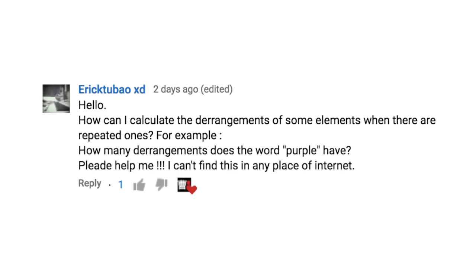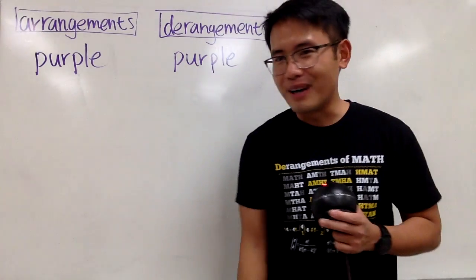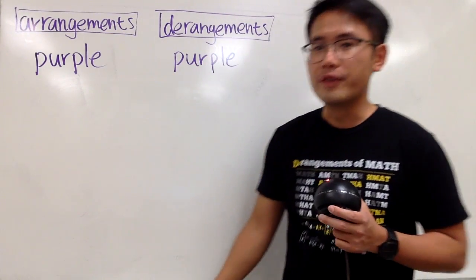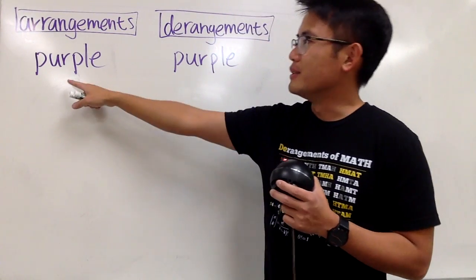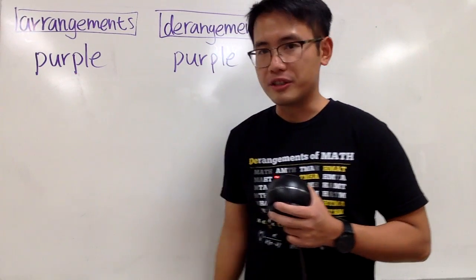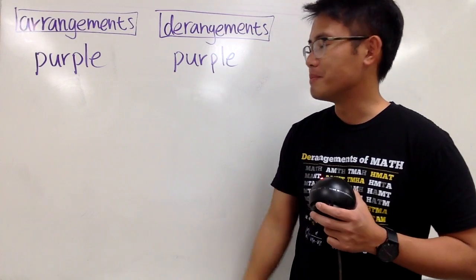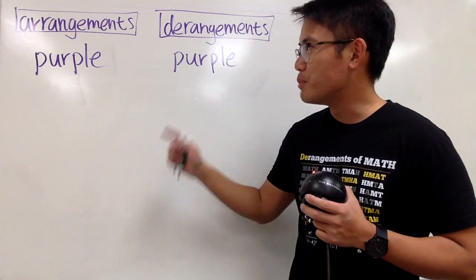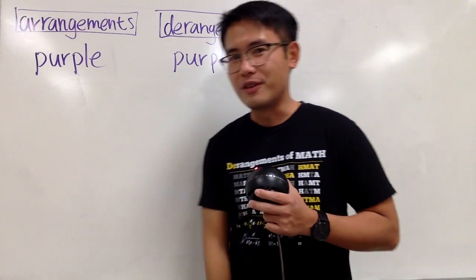Ladies and gentlemen! We are going to talk about arrangement and derangement of the word purple. You see that this has six letters, but P and P are the same. We have two P's, some repetitions, so we have to be really careful with both situations. Let's talk about this one first.